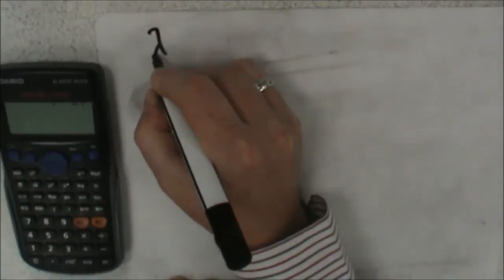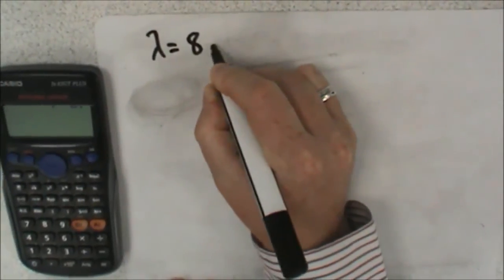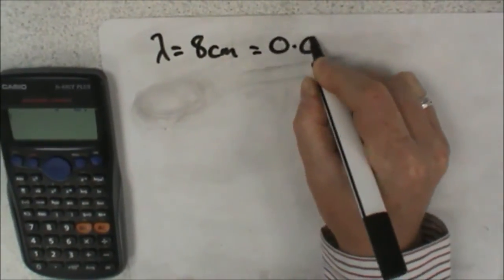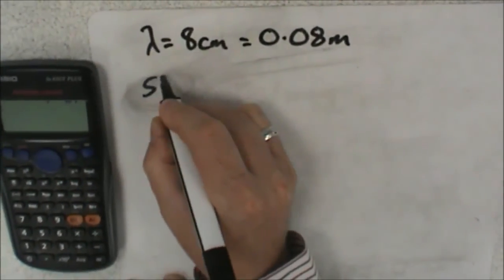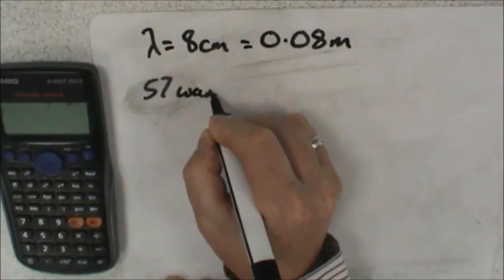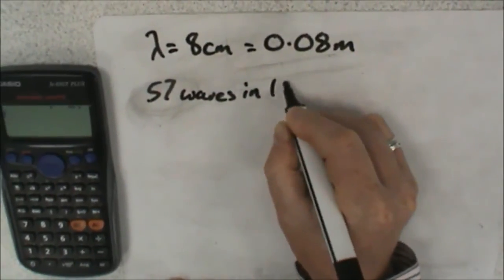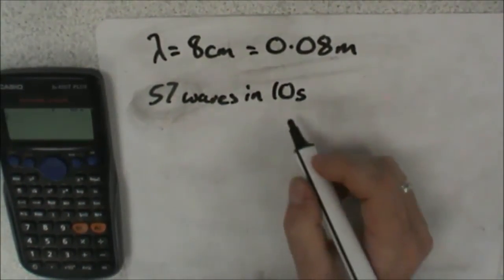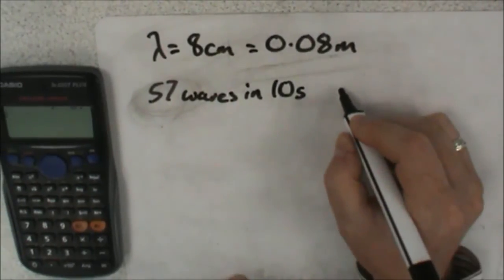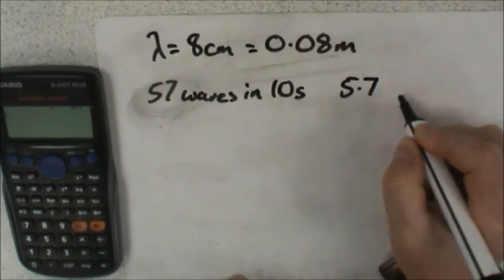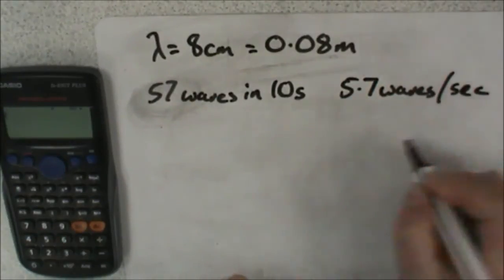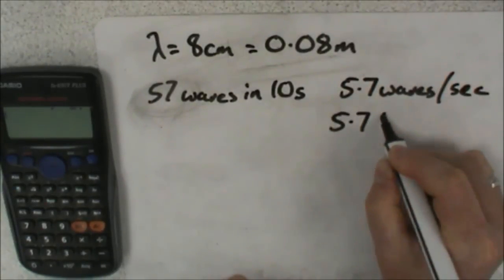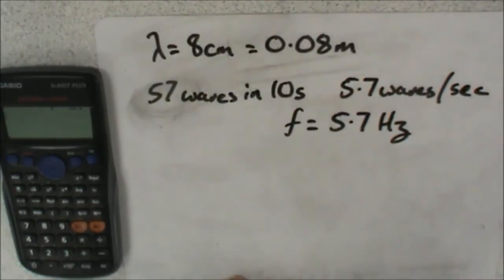So reviewing our footage, we know that we have a wavelength of 8 centimeters, which is 0.08 meters. We also know that we got 57 waves in 10 seconds. So if we divide both of those by 10, it tells us we had 5.7 waves per second, which is 5.7 hertz. That's our frequency.